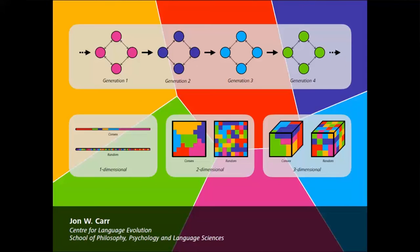This generalizes to higher dimensions. So if we have two dimensions, then we expect not to see a messy random system like this, but something like this, which is structured in these convex regions and up to three dimensions.